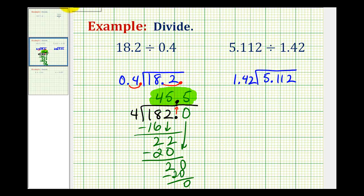So the first step is to move the decimal in our divisor to make this a whole number. So in this problem, we'll have to move it 1, 2 places to the right. So we'll have to do the same in our dividend. 1, 2.